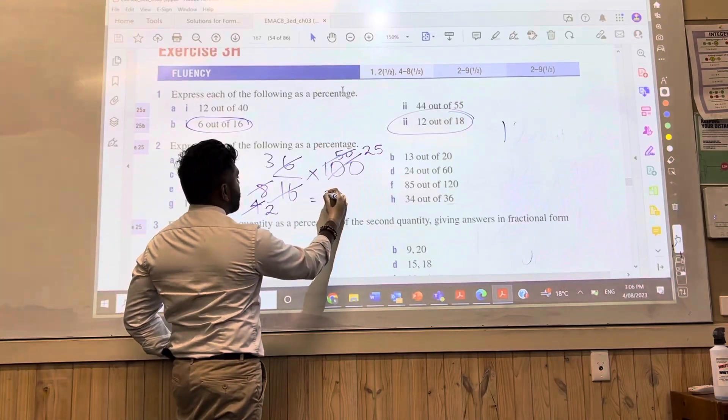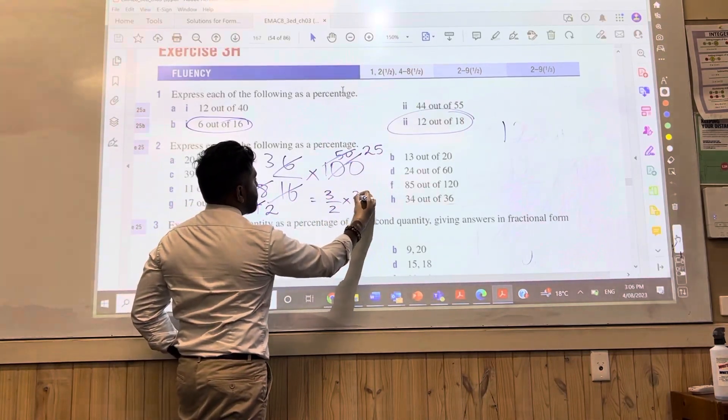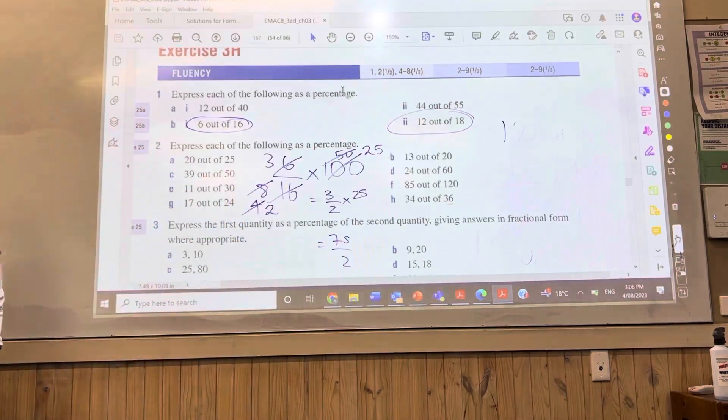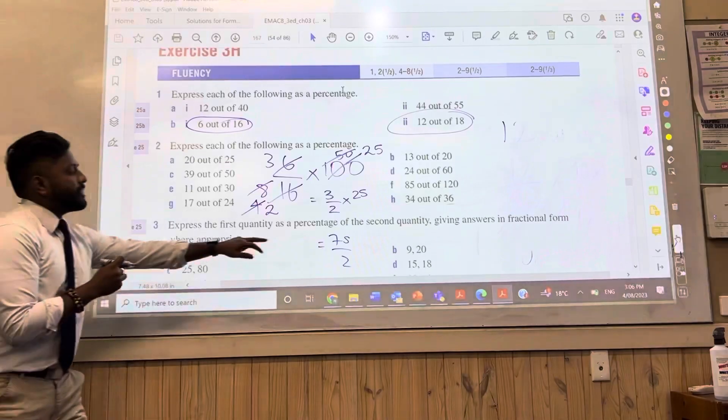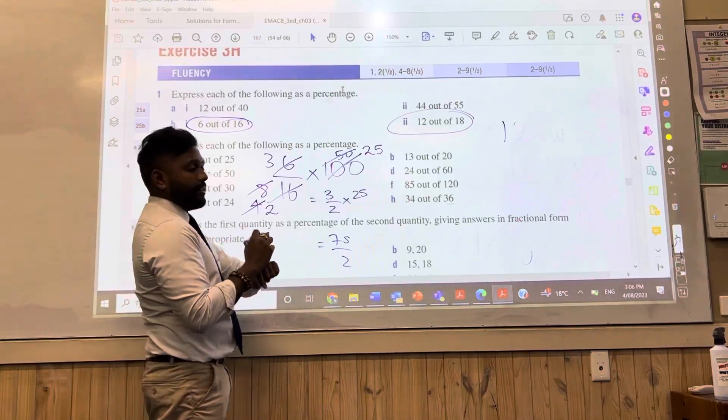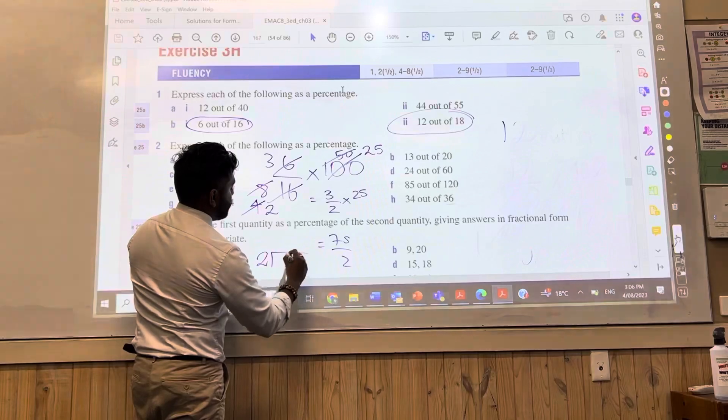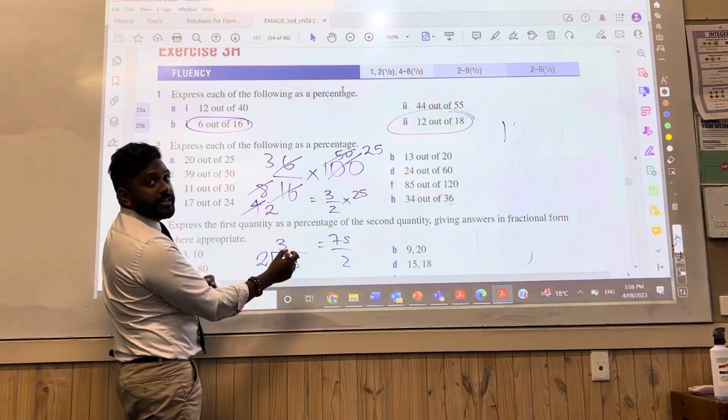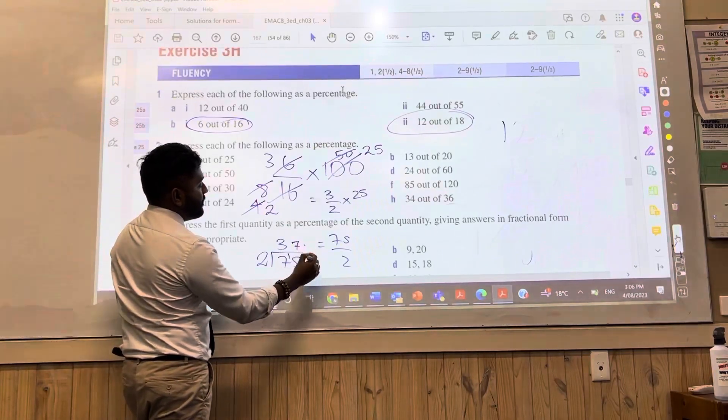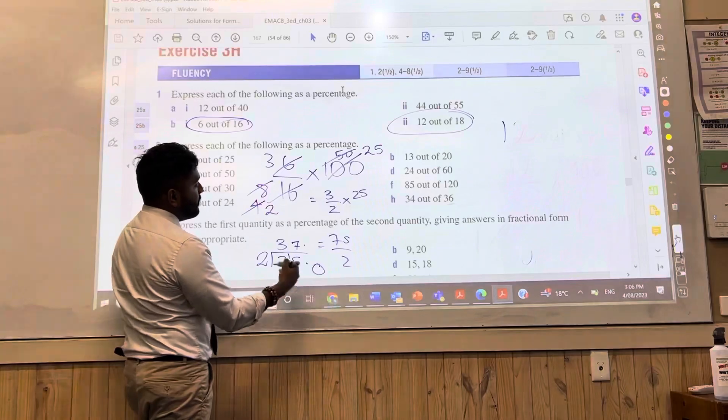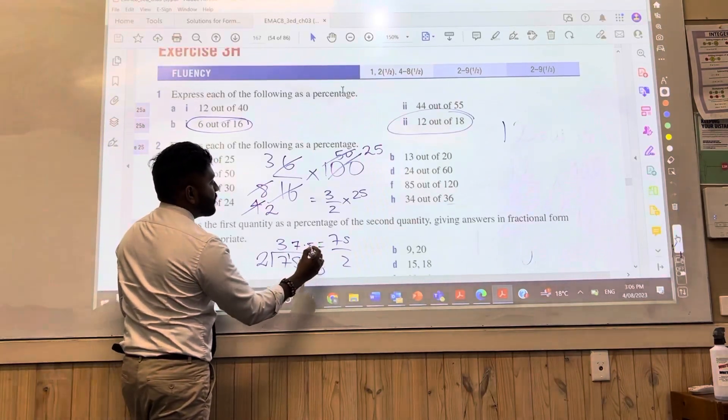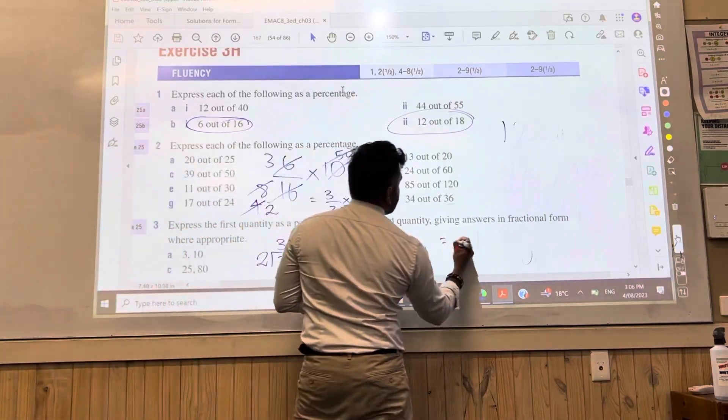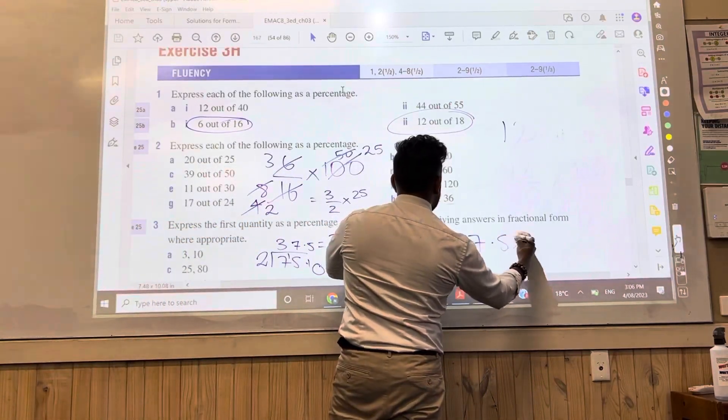Now you're left with 3 over 2 times 25, which is 75 over 2. How do you work that out as a number, Ella? 75 divided by 2. 2 into 75, which is 3. Carry the 1. 2 into 15 is what? 7. 7 times 2 is 14. Carry the 1 is 5. How do you write that as a percentage, Alan? 37.5%. Well done. 37.5%.